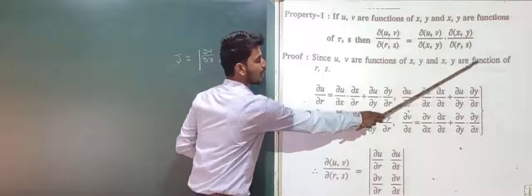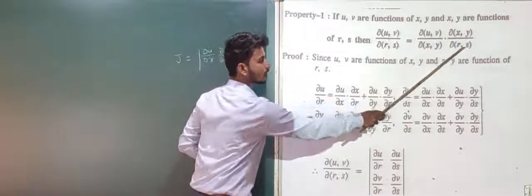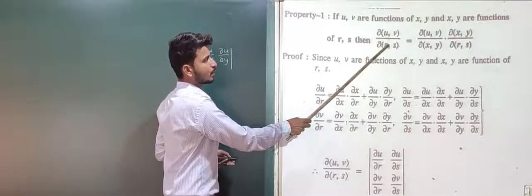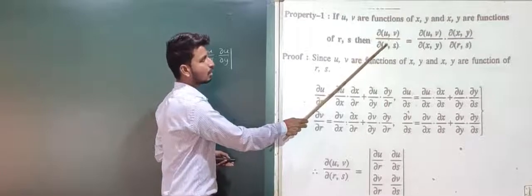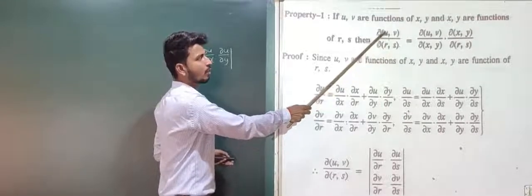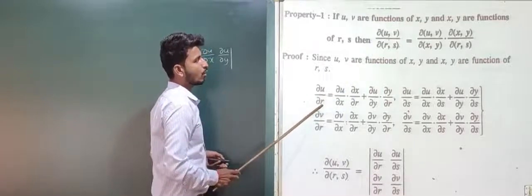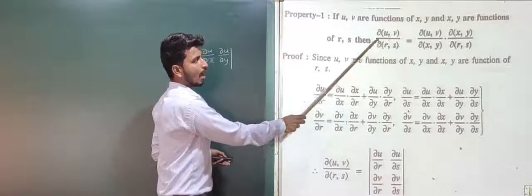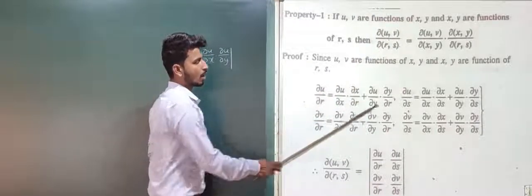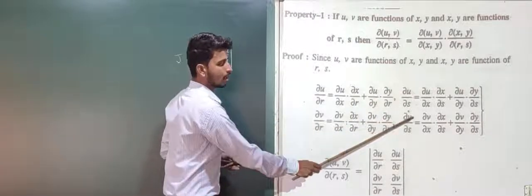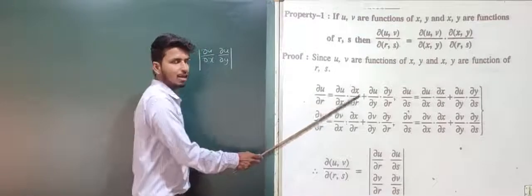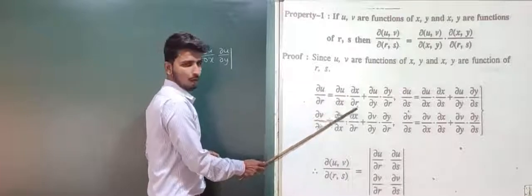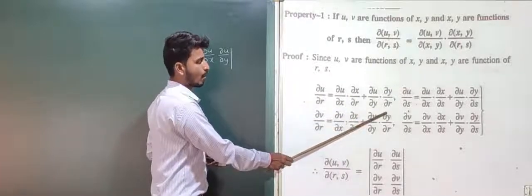Since u and v are functions of x and y, and x and y are functions of r and s, we need the partial derivatives of u with respect to r and s. Using continuous partial differentiation, ∂u/∂r = ∂u/∂x · ∂x/∂r + ∂u/∂y · ∂y/∂r.